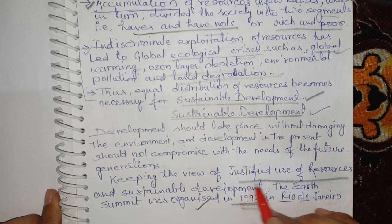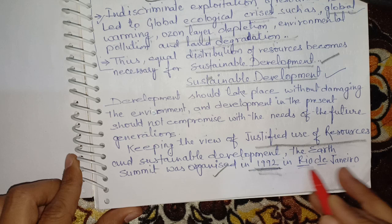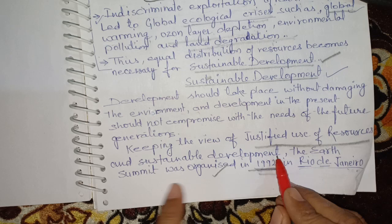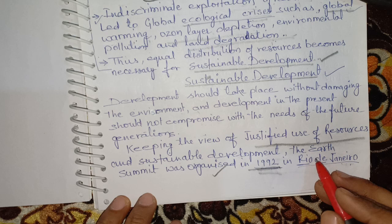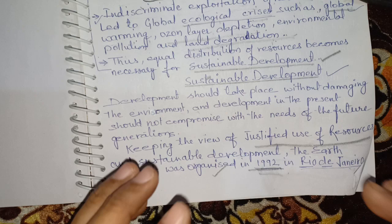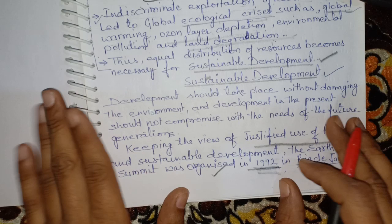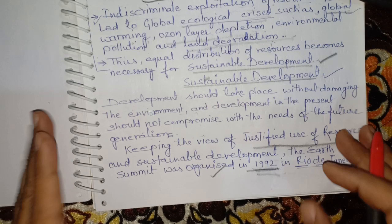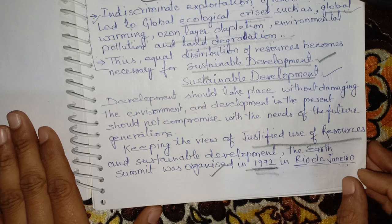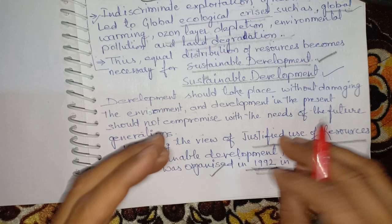Keeping in view the justified use of resources and sustainable development, the Earth Summit was organized in 1992 in Rio de Janeiro, Brazil, South America. Nations came together to ensure resources are properly utilized, justly distributed in society, and that every nation has equal access to resources — as nature belongs to everyone. 100 member nations gathered and made a declaration called Agenda 21. The next topic will be about Agenda 21 and sustainable development from the Earth Summit.